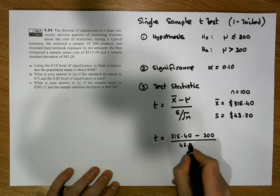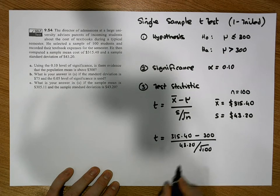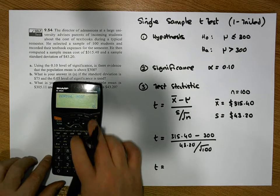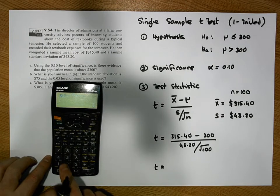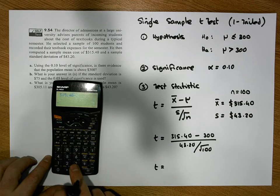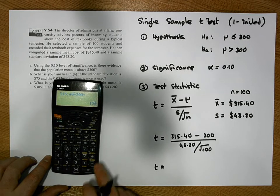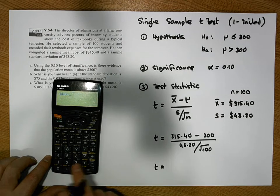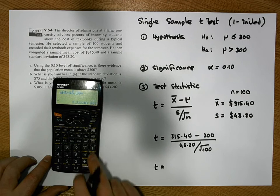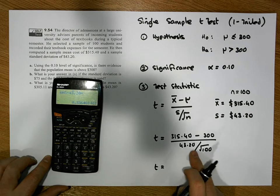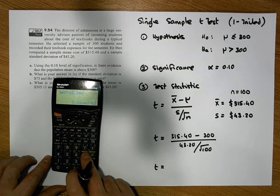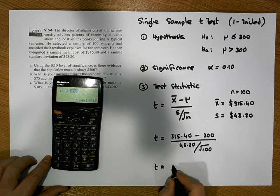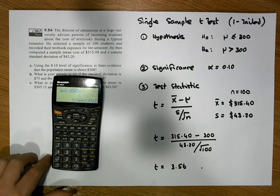Working through the calculation: the numerator is 315.40 minus 300 = 15.4. Dividing by 43.20 gives 0.356. Multiplying by √100 — or equivalently dividing the denominator — gives us a test statistic of approximately t = 3.56.